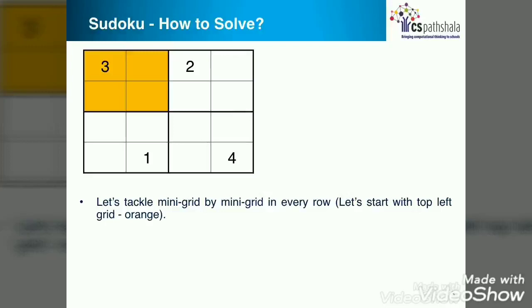Look at here, orange grid is at the left-hand side top grid. Number 3 is already present in the number 1 grid. Now 1, 2 and 4 are remaining. What number should I try next?